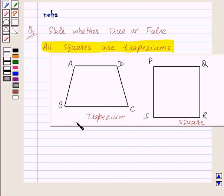Let's see what is a trapezium. A trapezium is a quadrilateral in which one pair of opposite sides is parallel, i.e. AD is parallel to BC.